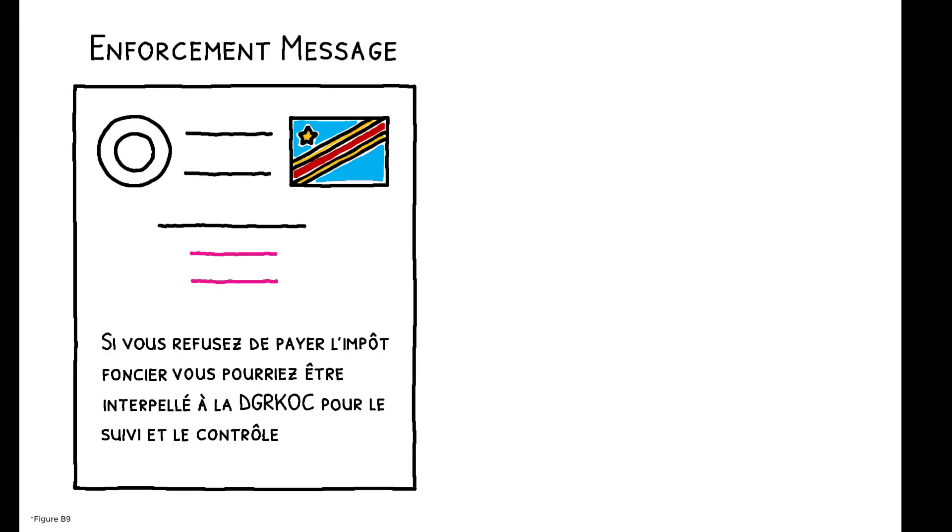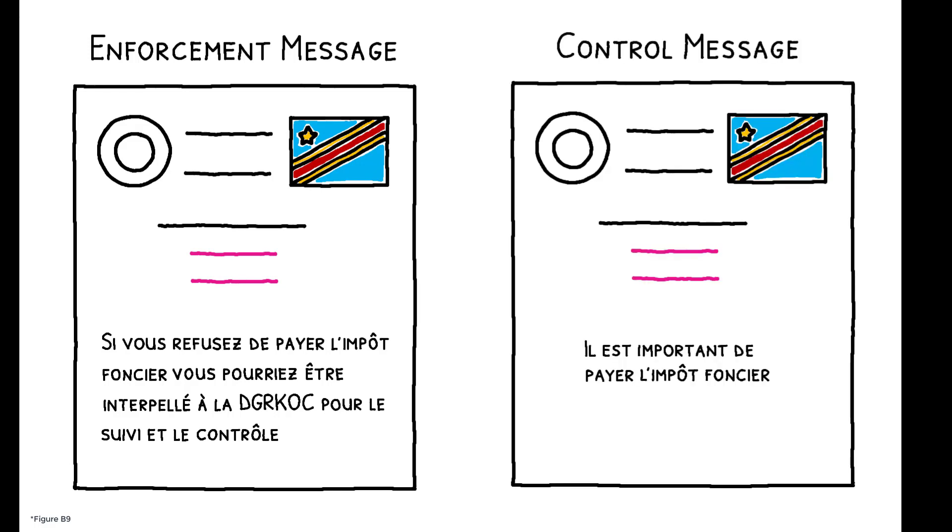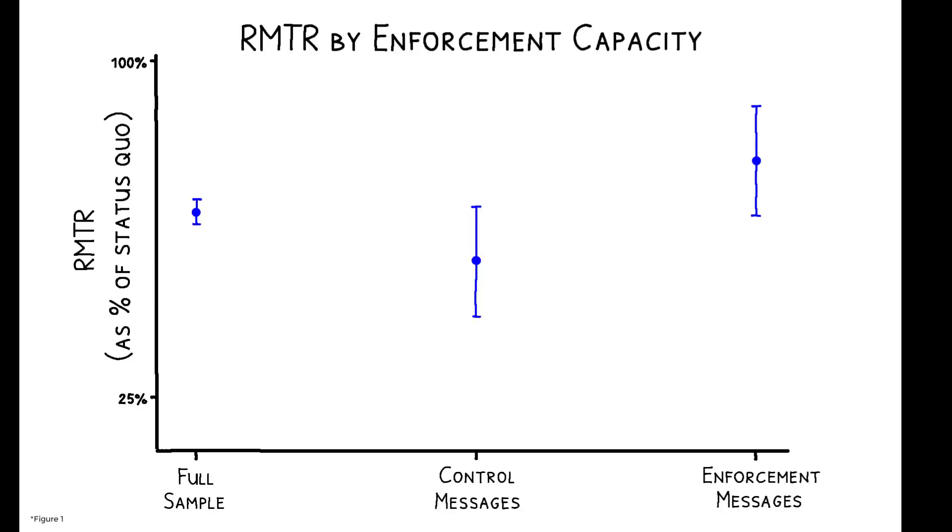While one set informed recipients that refusal to pay their property tax would entail the possibility of audit and investigation, the other simply stated that paying the tax is important. Not only did enforcement messages increase compliance and revenues, the estimated RMTR is 41% higher among owners in this group. This suggests that investing in tax enforcement can actually raise the RMTR.